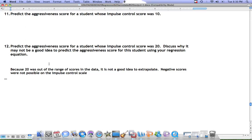Plugging 20 into the equation actually gives us a negative value for the impulse control. We know that that is not a possible value of our impulse control score.